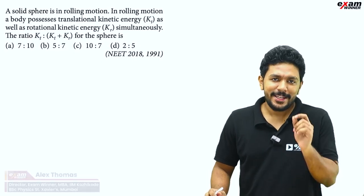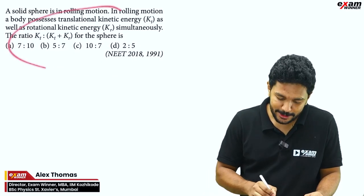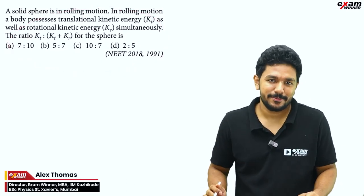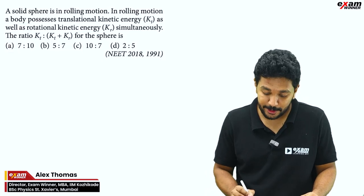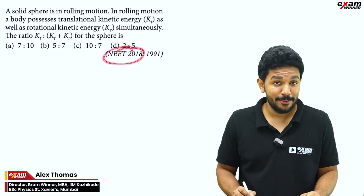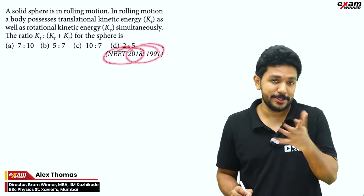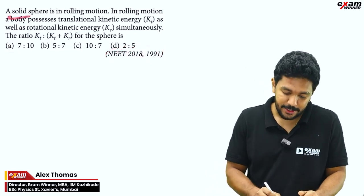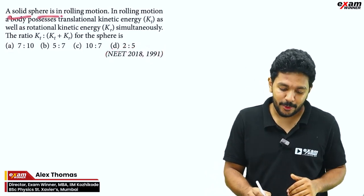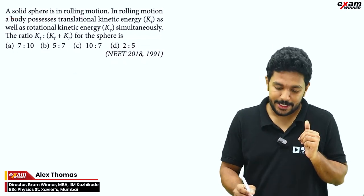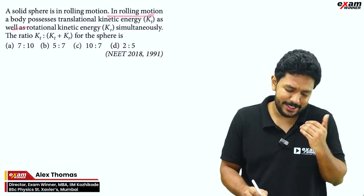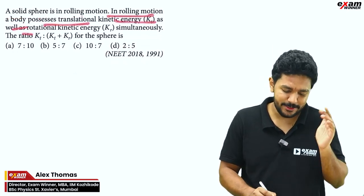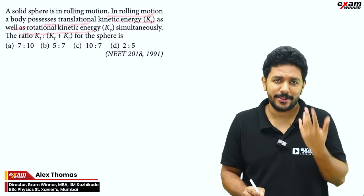Hello friends! In your exam, this is the first step. You can see the next step. In 2018, a solid sphere is in rolling motion. In rolling motion, a body possesses translational kinetic energy as well as rotational kinetic energy.